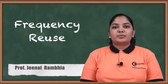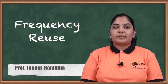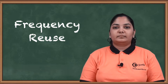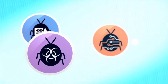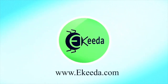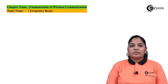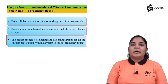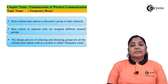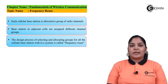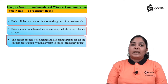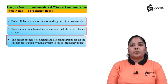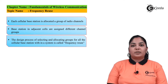Frequency reuse is necessary because we have a very strict spectrum bandwidth in which we have to fit multiple users. Before starting with frequency reuse, let us understand the concept of cellular. Initially in the mobile communication system, a very large area was given a single transmitter base station which had very high power, and hence very limited channels could be used in that large area. Reusing the frequency in the same area was not possible because of interference.